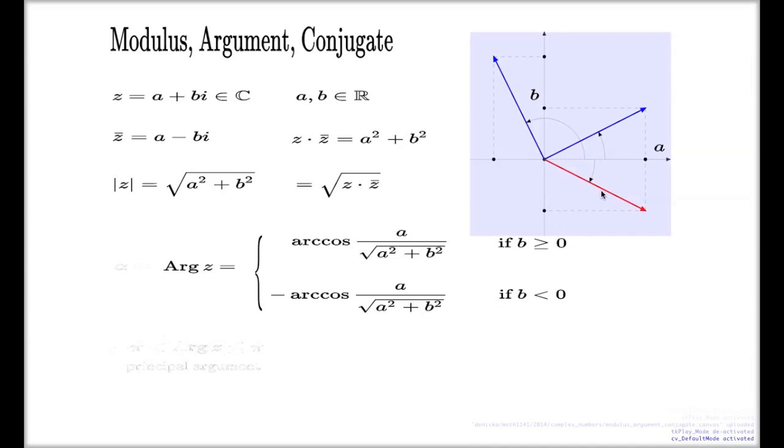If your vector goes on this side, on the upper half plane, this is the value which delivers the argument. If your vector goes in the bottom half plane, this is the value which will deliver your argument.